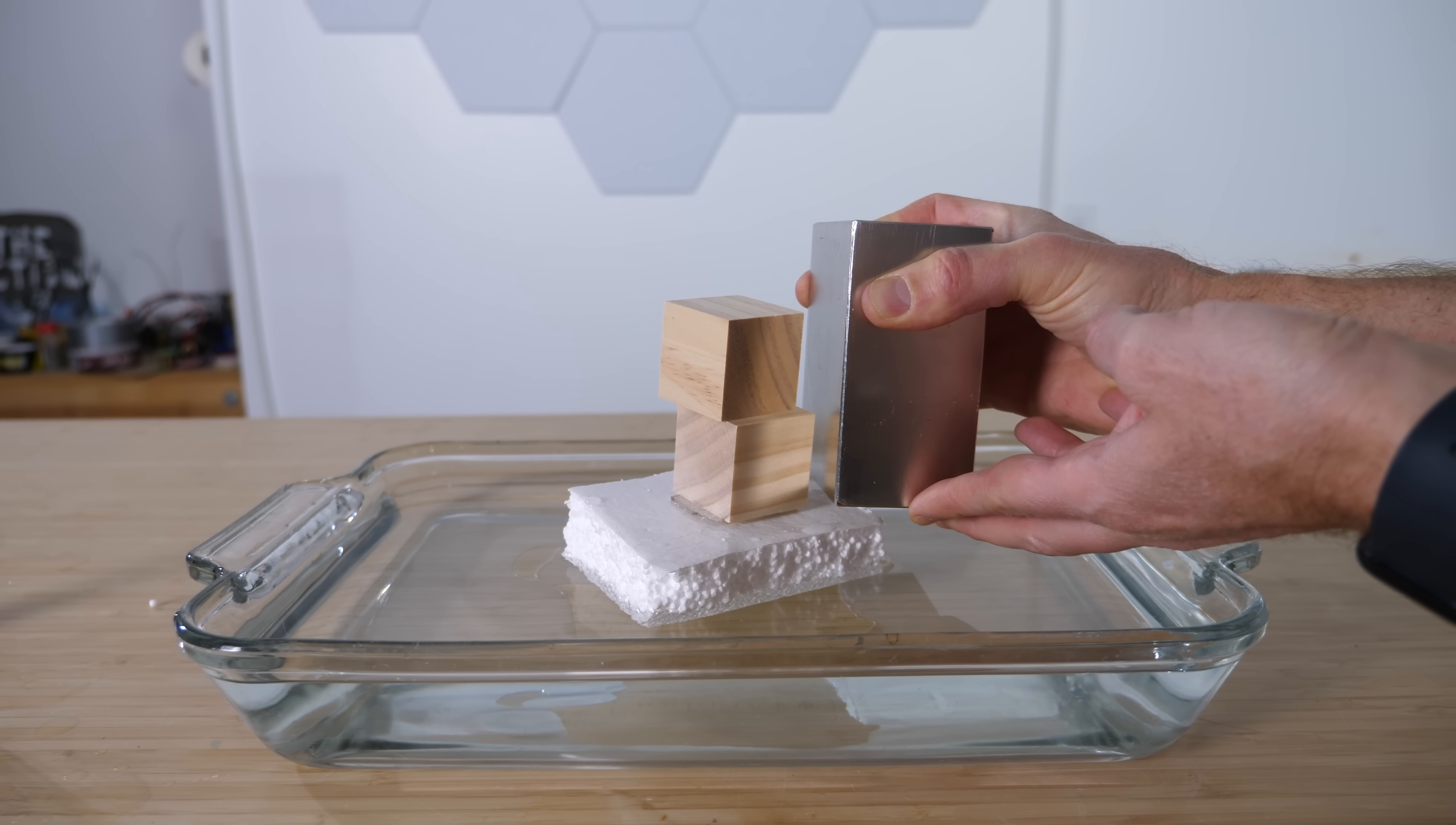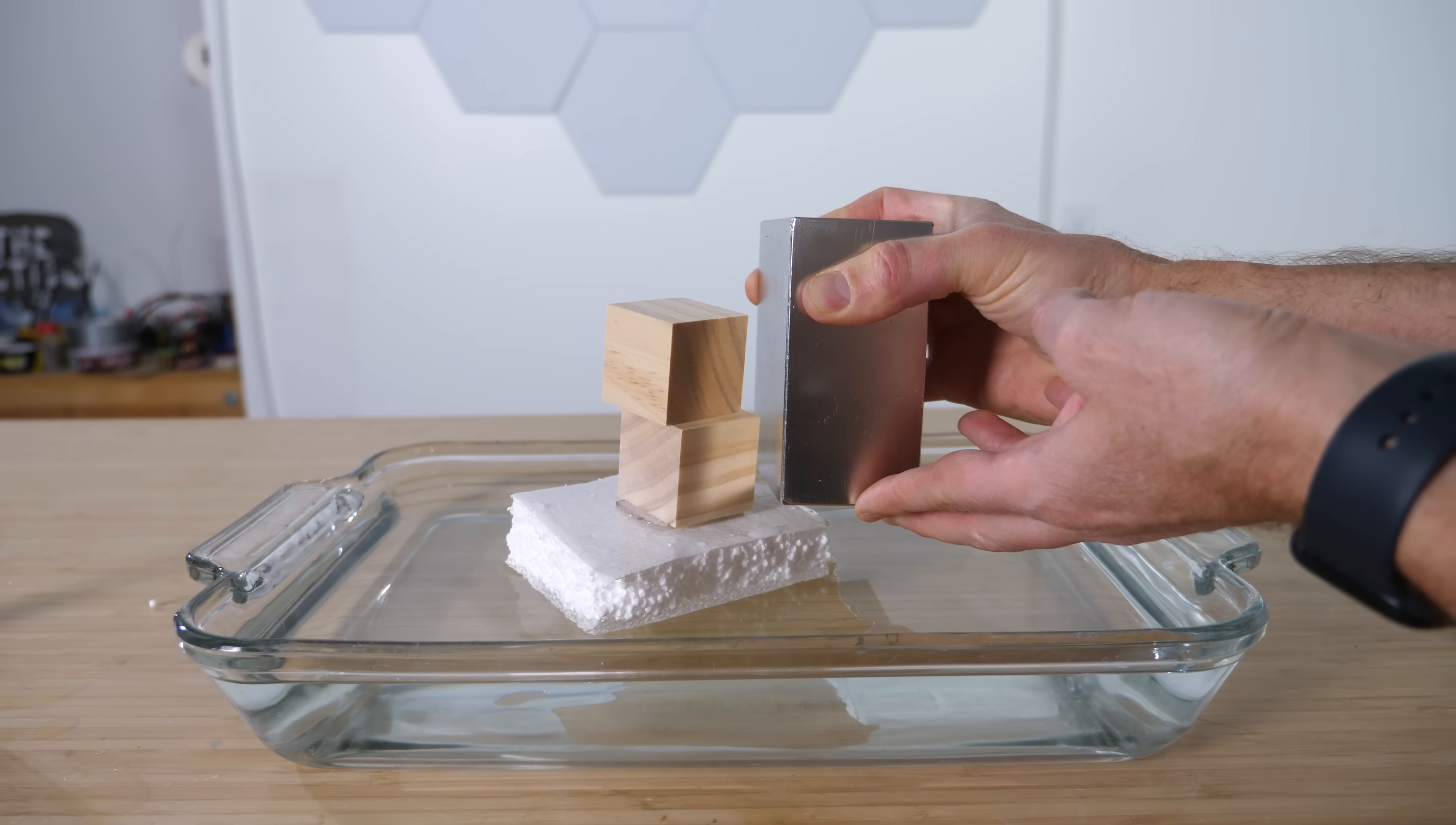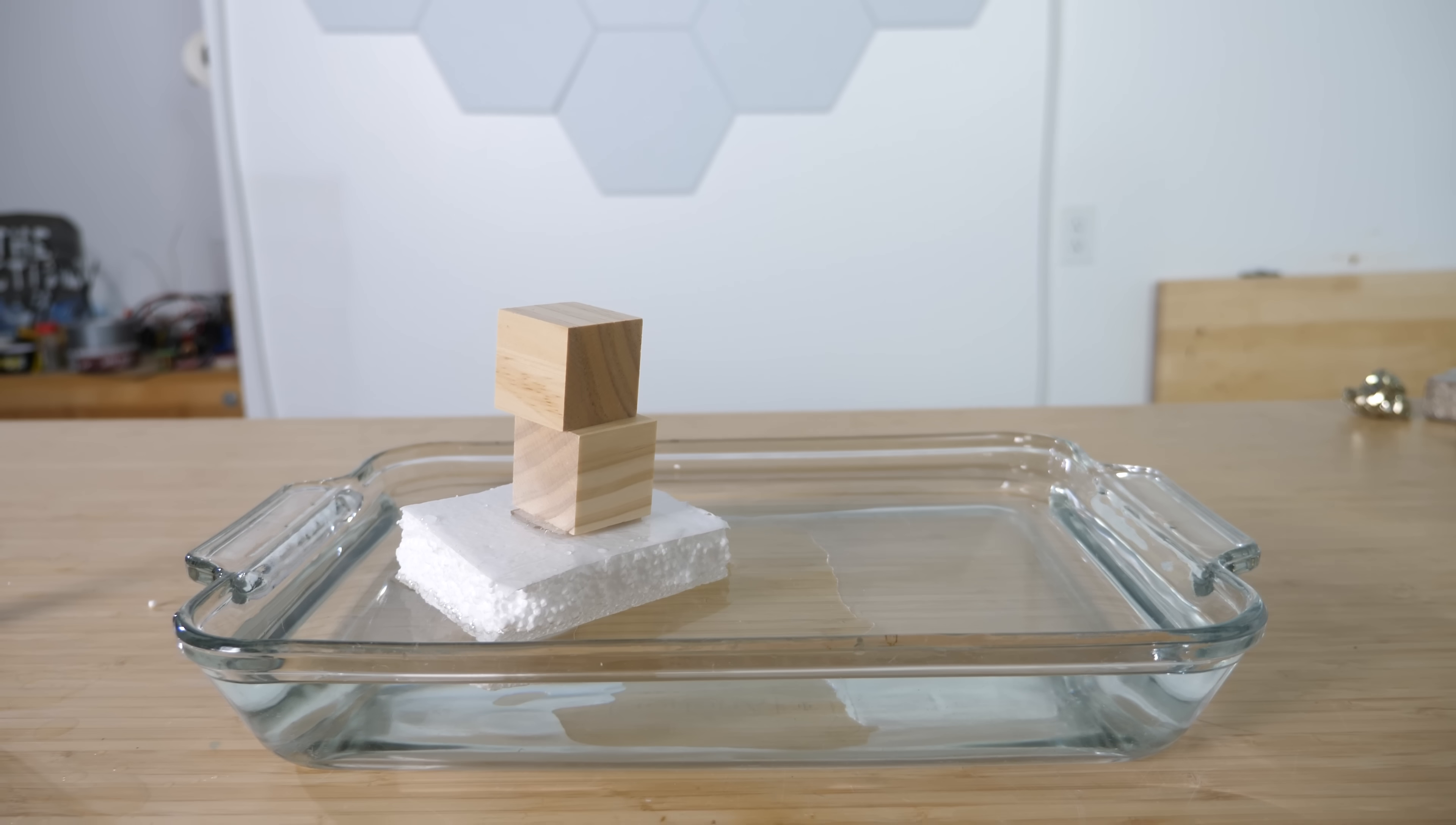So if everyday materials like water, wood, are repelled by magnets, what's causing this behavior? To answer that, we have to understand what causes a magnetic field in the first place.